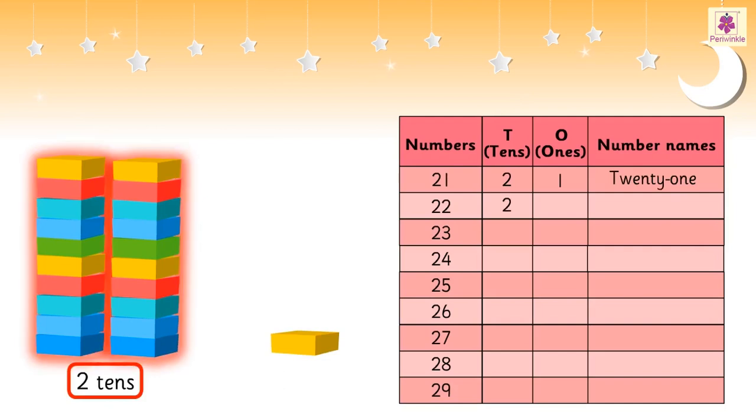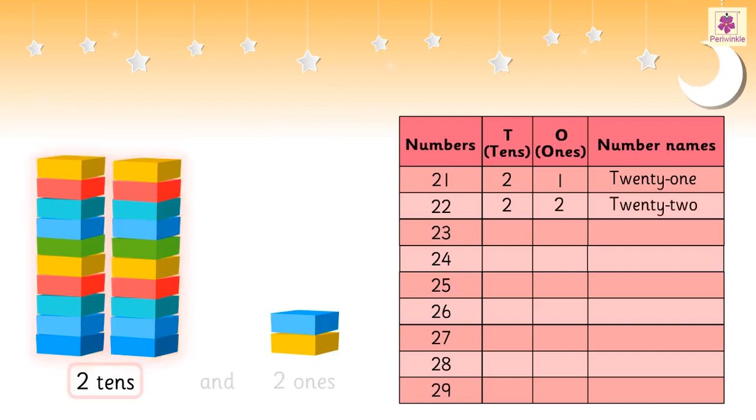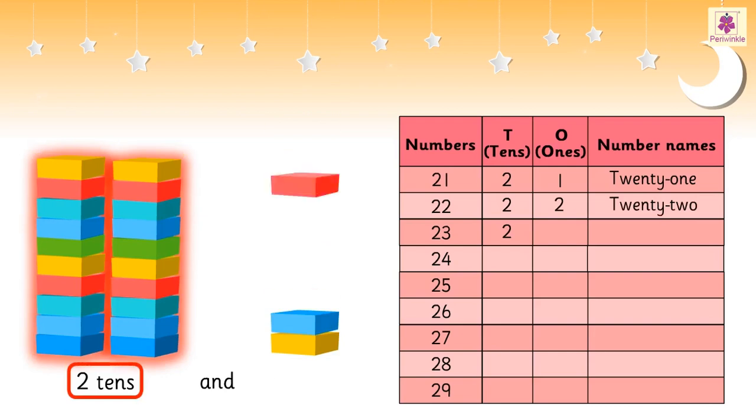Similarly, two tens and two ones is 22. Two tens and three ones is 23.